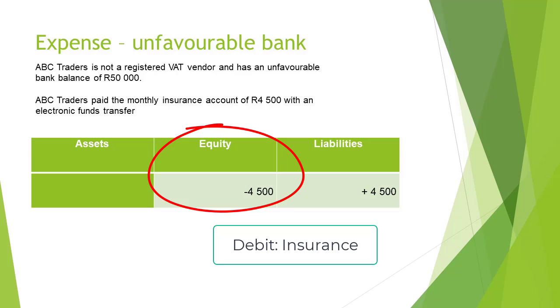On the other hand, the insurance expense will still decrease equity and the insurance account will be debited with 4,500 rand.